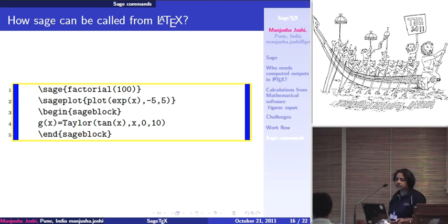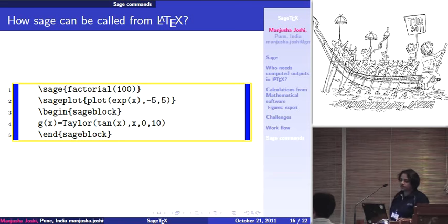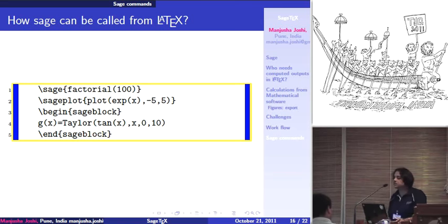Then another interesting command is sageplot, which is useful for plotting 2D as well as 3D. The sageplot command in curly brackets — plot(exp(x), -5, 5) — it is very simple. We are plotting e raised to x with range minus 5 to 5, that's it. The inner bracket shows the Sage command, and this is one single line command. Another environment available is begin sageblock / end sageblock — that is the actual Sage code which gets printed in your TeX file.